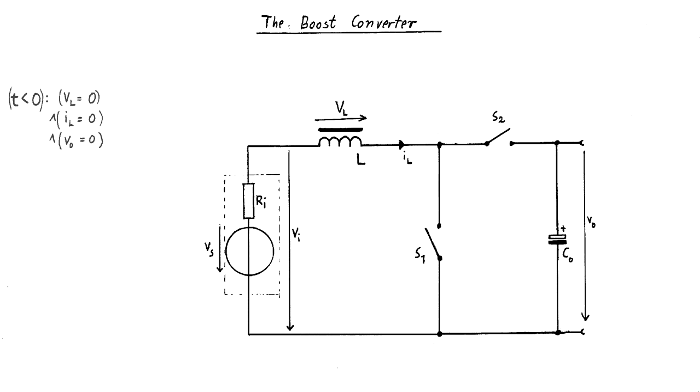Before the beginning of any switching, the current through the inductor is zero. The voltage across the inductor as well as the output voltage are also zero. Now t on begins. The switch S1 is closed, creating a loop over the inductor L. A magnetic field is created by the inductor in which magnetic energy is stored.